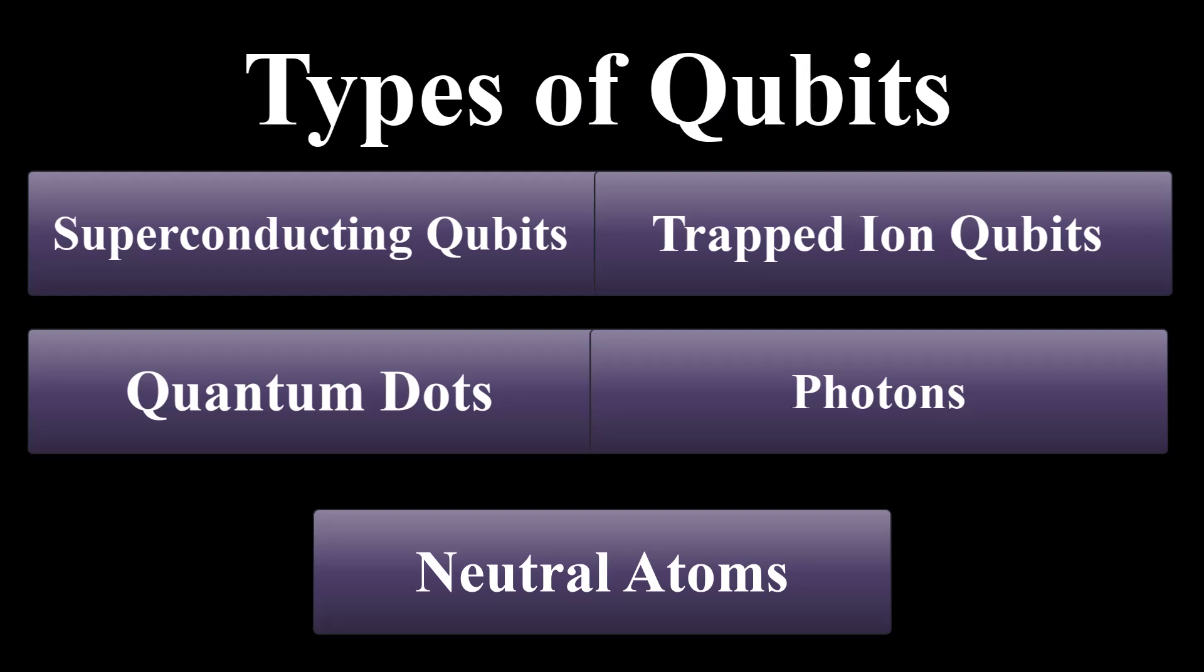Let's cover some of these. For example, superconducting qubits operate at ultra-low temperature, offering high speed and precision. Trapped ion qubits are valued for their long coherence times and accuracy. Quantum dots use single electrons, promising scalability with existing semiconductor technology.